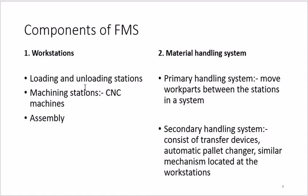The second component is material handling systems. There are two kinds: primary and secondary. The primary handling system moves work parts between stations. For example, if you have 10 machines in a row, material moves from the first to the second workstation. That movement is primary handling. The time taken from one machine to the next hampers production rate, which is why it is called primary — it is of prime importance.